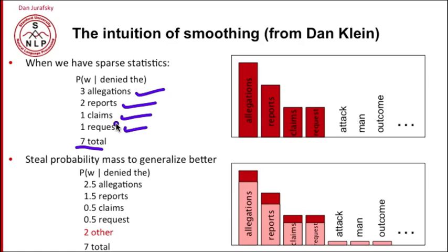But we would like to say, well, maybe denied the effort might occur. Denied the outcome might occur. So we'd like to steal some probability mass and save it for things we might not see later.